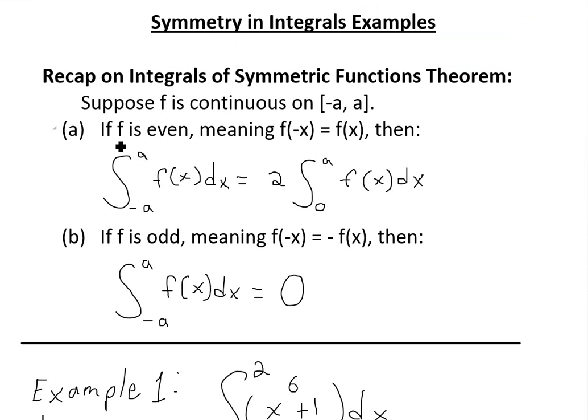If f is an even function, meaning f of negative x equals f of x, then we have integral from negative a to a of f of x equals 2 times integral from 0 to a of f of x dx.